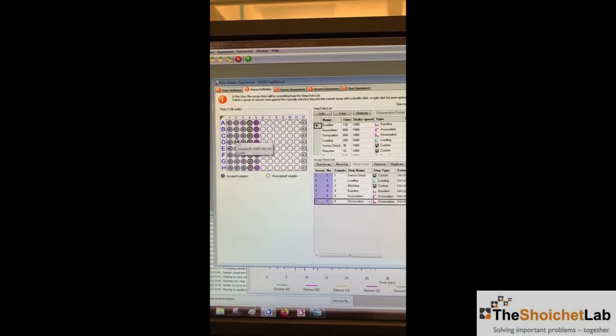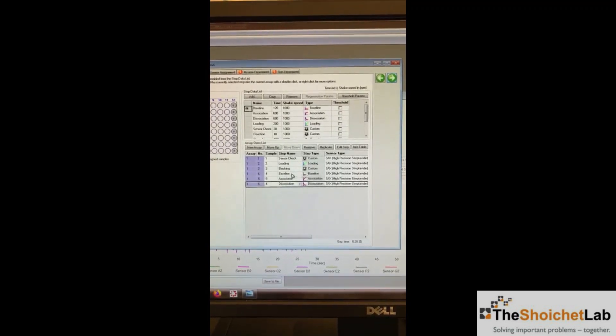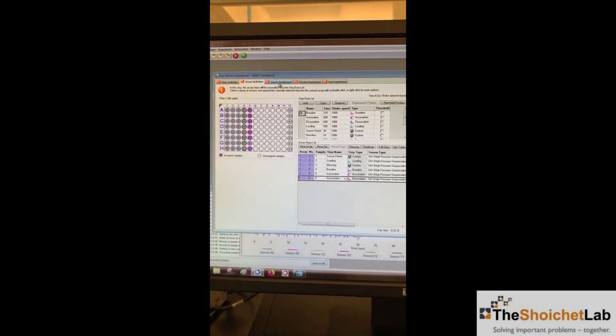In the software, we are able to input the sensor check, loading, blocking, baseline, association, and dissociation steps. Afterward, we need to select the position where the sensors are going to be located and the type of sensor.